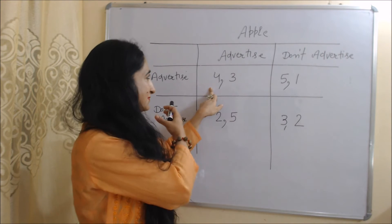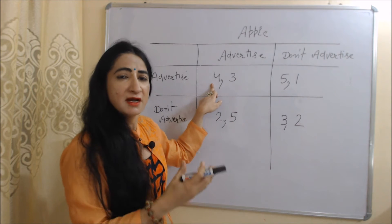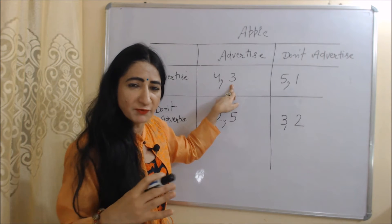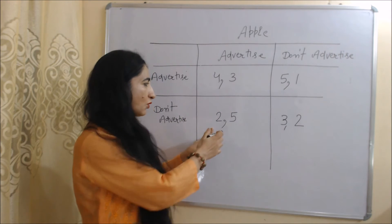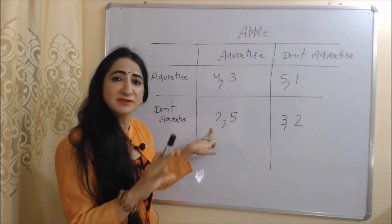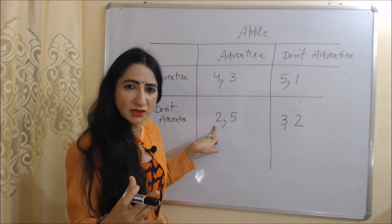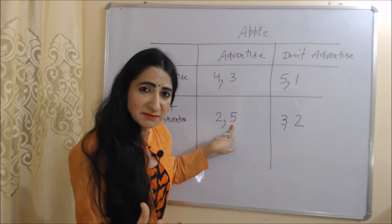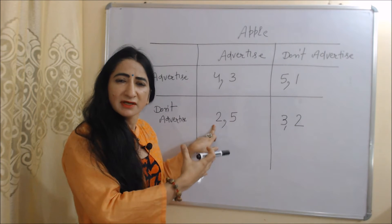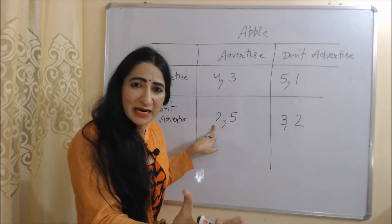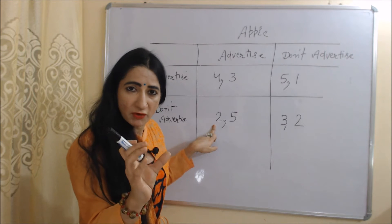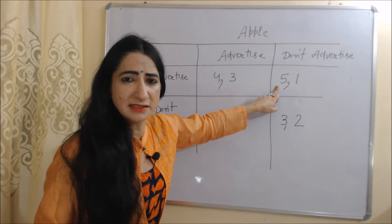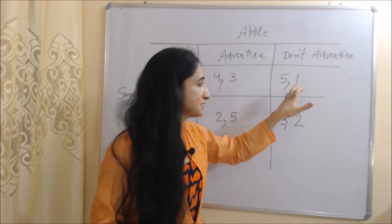In the first case, both companies advertise. Samsung receives an outcome of 4 and Apple receives an outcome of 3. In the second case, only Apple advertises but Samsung does not. Samsung receives an outcome of 2 and Apple receives 5. Samsung still receives an outcome of 2 even without advertising because Samsung saves money from advertisement expenditure and invests it elsewhere.